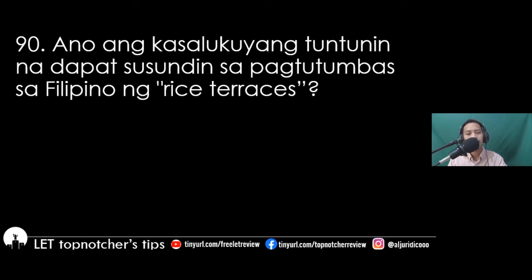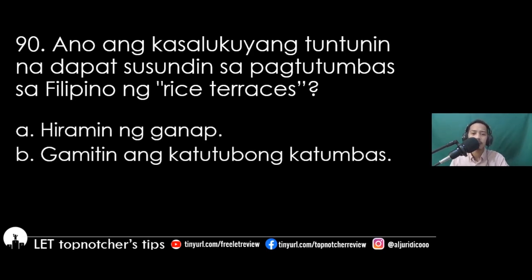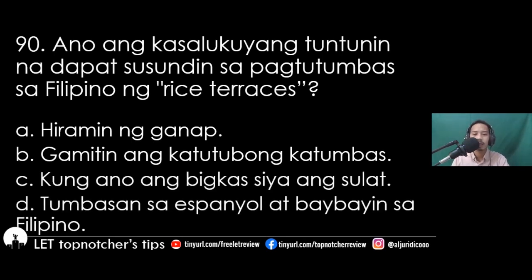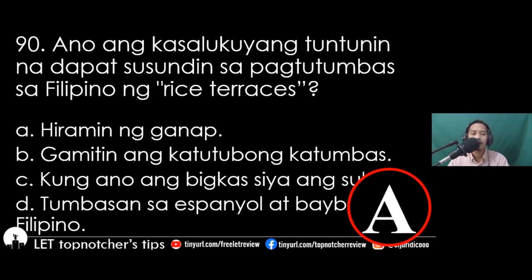Item 90 (Filipino): Ano ang kasalukuyang tuntunin na dapat sundin sa pagtutumbas sa Filipino ng 'rice terraces'? A) giramin ng ganap, B) gamitin ang katutubong katumbas, C) kung ano ang bigkas siya ang sulat, D) tumbasan sa Espanyol at baybayin sa Filipino. Ang tamang sagot ay titik A, giramin ng ganap.